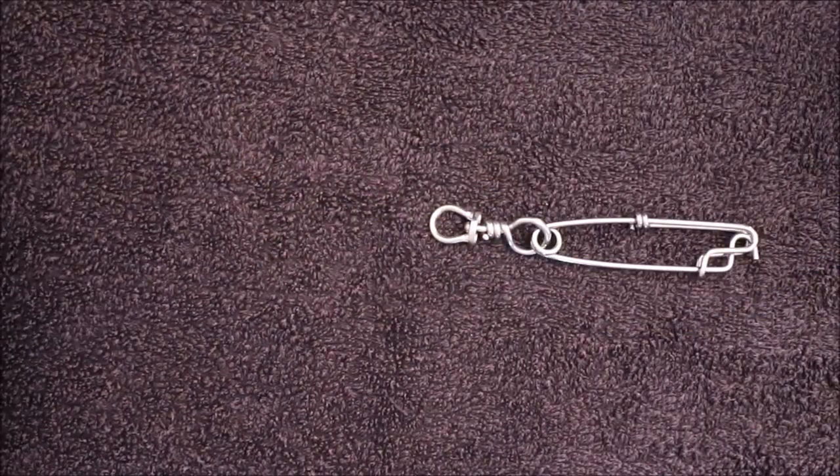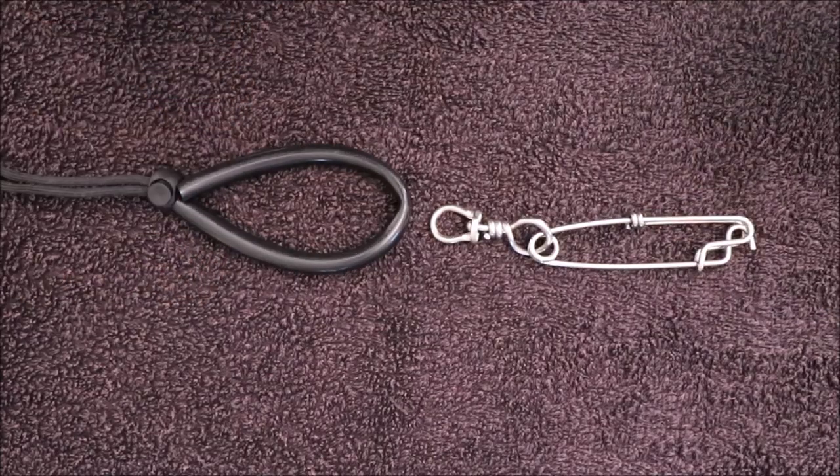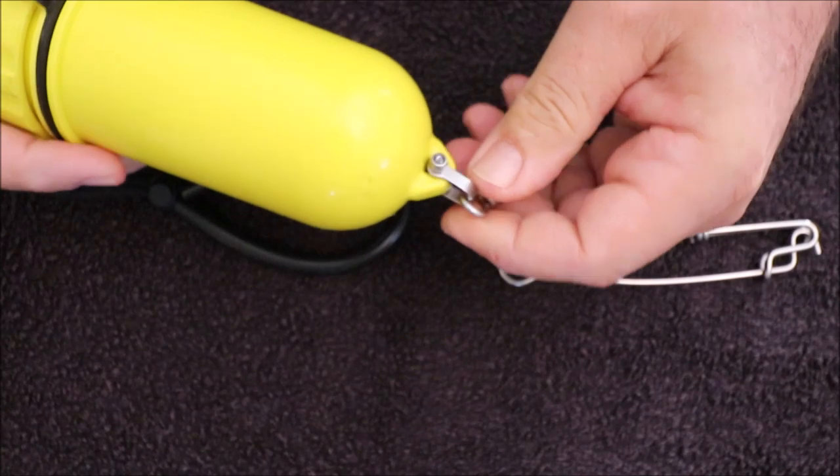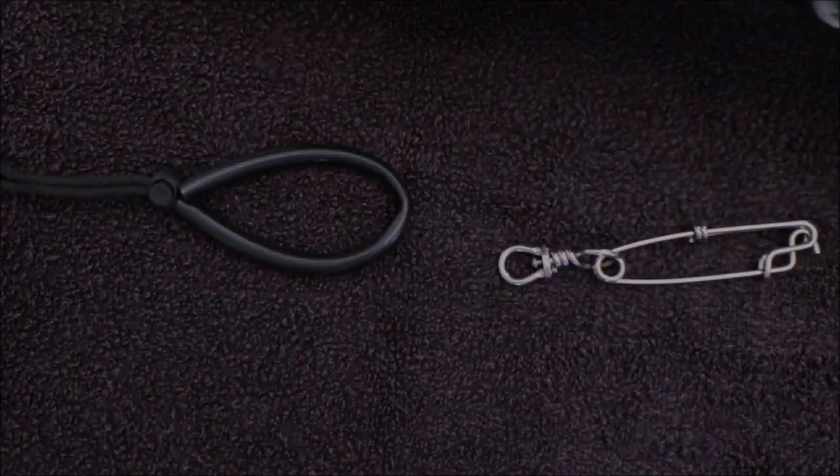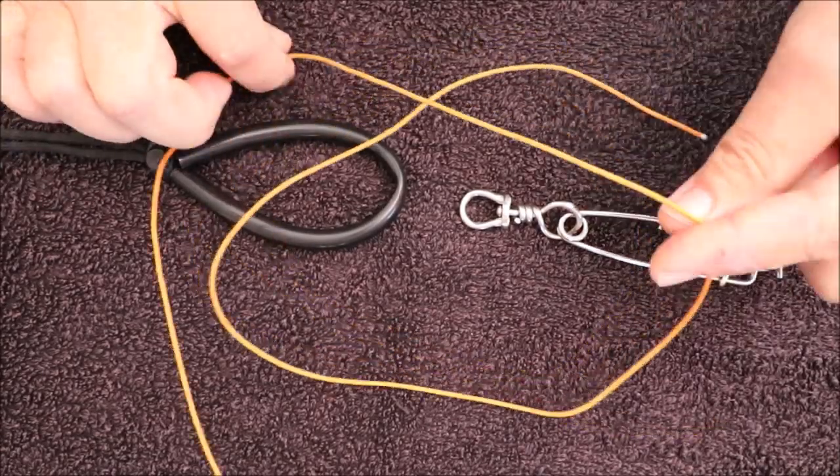Or snap clip onto a buoy, or a long line onto the buoy if you don't have a shackle. This is quite an easy system. For this demonstration I have about one meter of orange dyneema, keep it nice and visual.